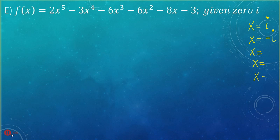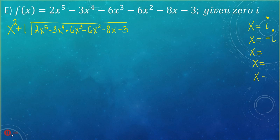Hopefully you're becoming more familiar with the process of long division. We will begin by dividing 2x to the fifth by x squared, so 2x⁵ divided by x² gives us 2x³. Line that up with our like terms. Now we're going to take 2x³ and multiply it by x² plus 1: 2x³ times x² is 2x⁵, and 2x³ times 1 is 2x³. We do our sign changes, which means they both become negative.